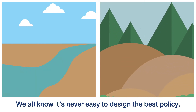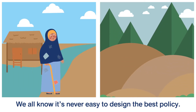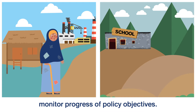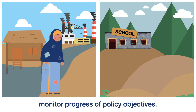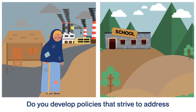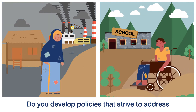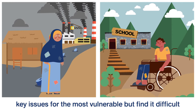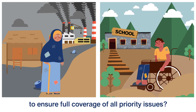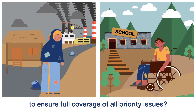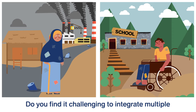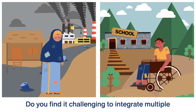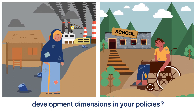We all know it's never easy to design the best policy. We also know it's challenging to monitor progress of policy objectives. Do you develop policies that strive to address key issues for the most vulnerable but find it difficult to ensure full coverage of all priority issues? Do you find it challenging to integrate multiple development dimensions in your policies?